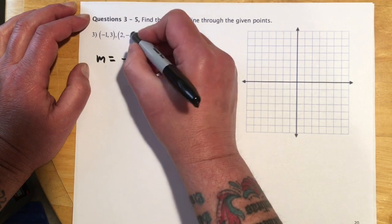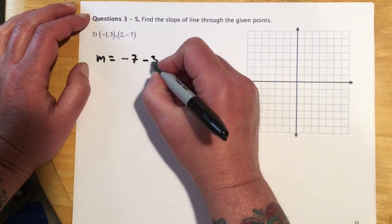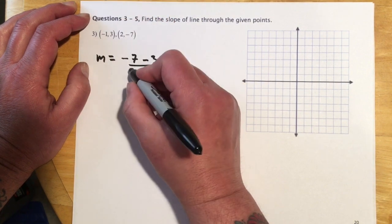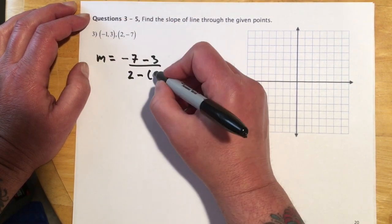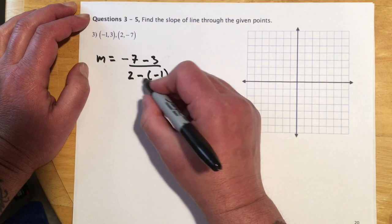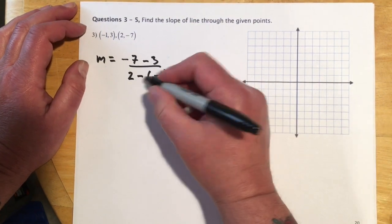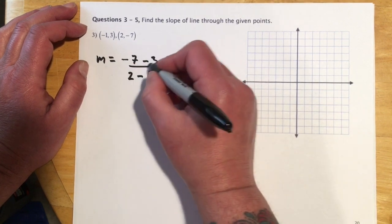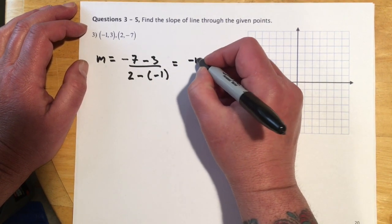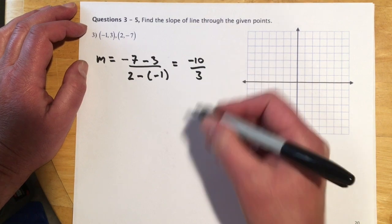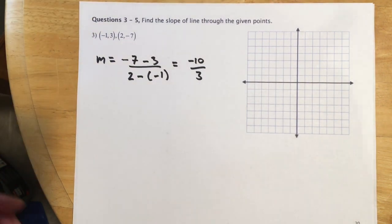So this would go y2, negative 7 minus 3, y1, and then x2 minus x1. So 2 minus, and that's what I wanted to show you right there, is that minus and minus, and people often make a little sign error there. So careful when you're subtracting a negative to get both signs down. And that becomes negative 10 over 3. So my slope should be negative 10 thirds.